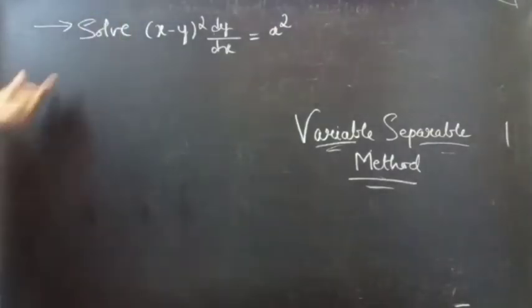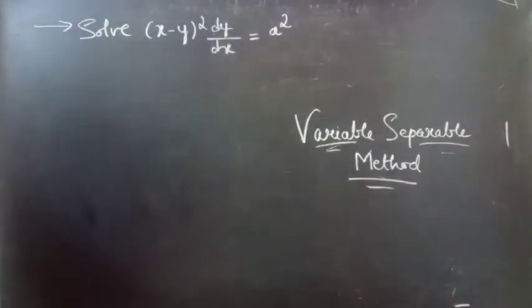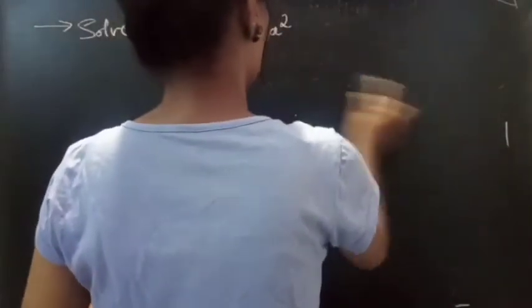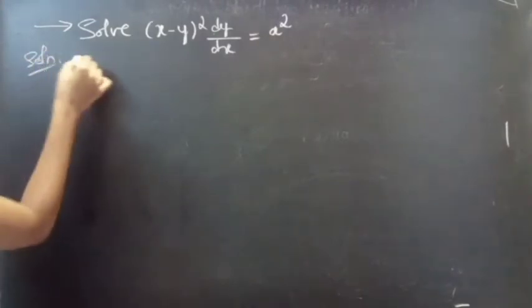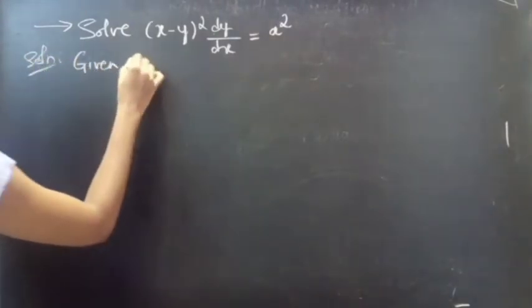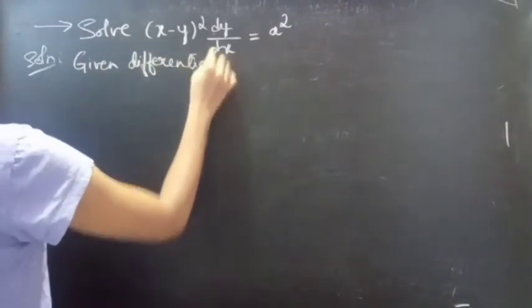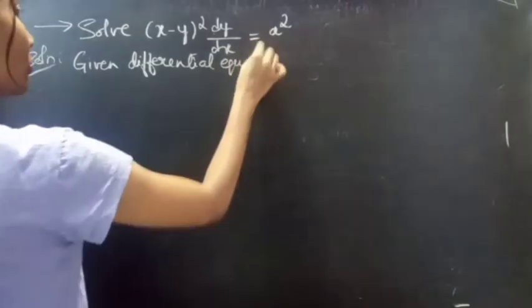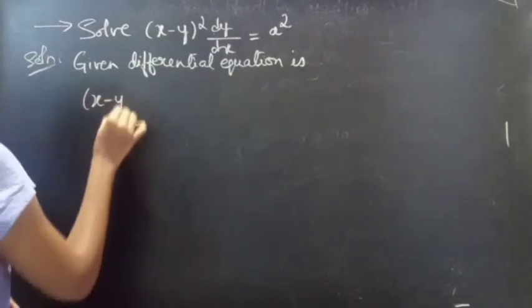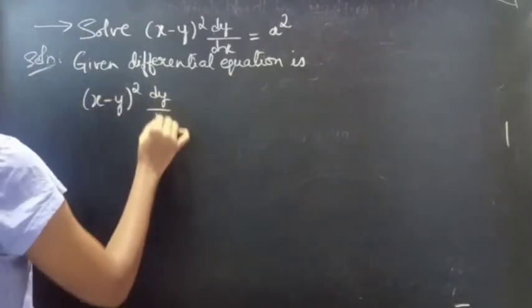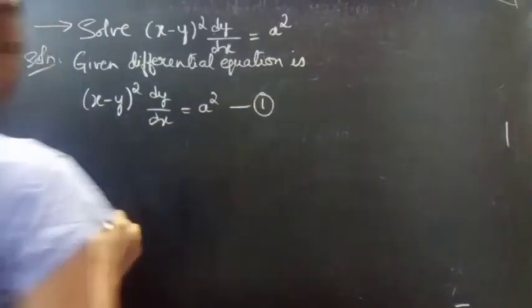Problem: Solve (x minus y) whole square into dy/dx equals to a square. Consider it as equation number 1.